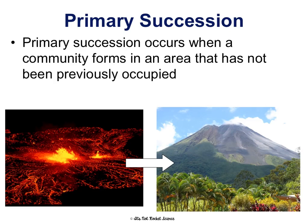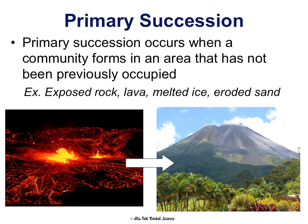Primary succession occurs when a community forms in an area that has not previously been occupied. For example, exposed rock, lava — they believe that Hawaii formed from primary succession. Melted ice: if a glacier recedes and leaves exposed rock, primary succession could occur there. Eroded sand — that kind of thing.